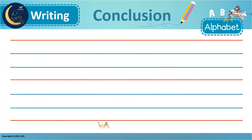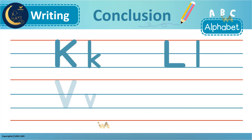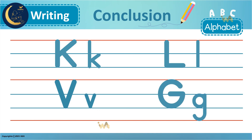It's time to review what we've learned. Today we learned about the letters K, L, V, and G. We also learned that the letter K has the sound K, the letter L has the sound L, and the letter V has the sound V.